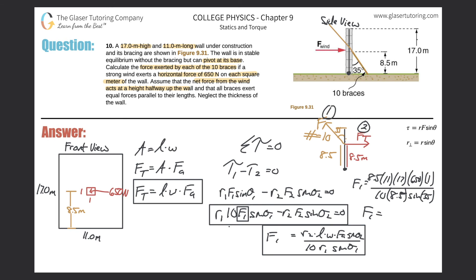Now let's calculate. 8.5 times 11 times 17 times 650, all divided by (10 times 8.5 times sin(35)). And there it is. We get a value of 2.12 × 10⁴ newtons. That is the force on each of those 10 braces. If you had to find the total force, it would just be that value we just found, 2.12 × 10⁴, multiplied by 10—basically 2.12 × 10⁵.